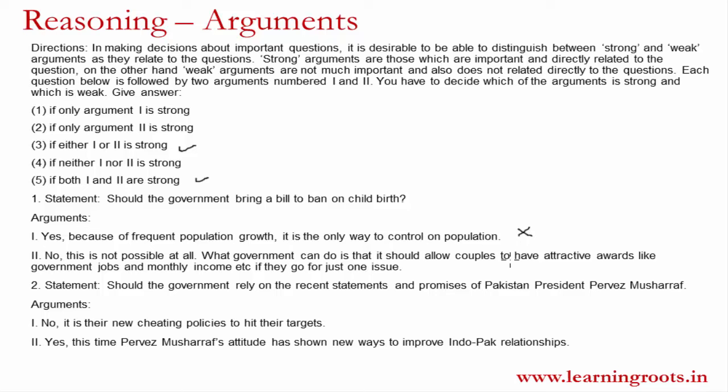Argument 2 says: no, this is not possible at all. What the government can do is allow couples to have attractive awards like government jobs and monthly income if they go for just one child. This makes sense — childbirth is a physiological process that cannot really be eliminated completely even with stringent government measures. The suggestion of rewarding people is logical and can be delivered on a large scale. So argument 2 is a strong argument — it is sensible and can be practically carried out.